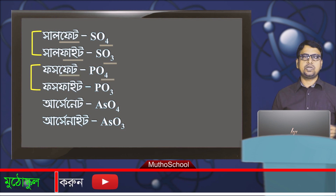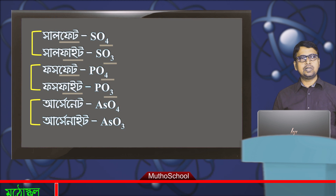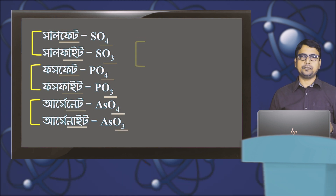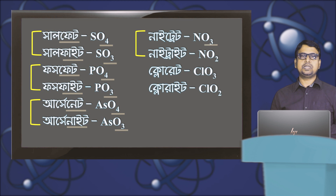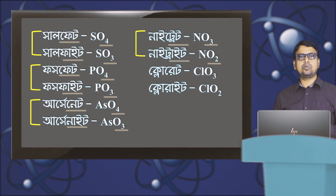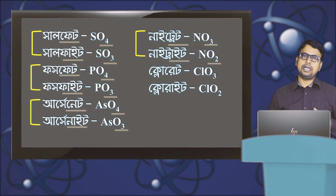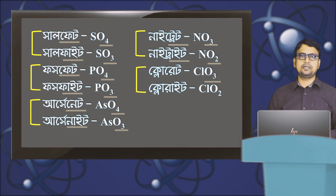Phosphate PO3, arsenate AsO4, arsenite AsO3, nitrate among nitrate, nitrate NO3 among NO2. NO3 is nitrate, NO2 is nitrite, CO3 is chlorate and CO2 is chlorate.